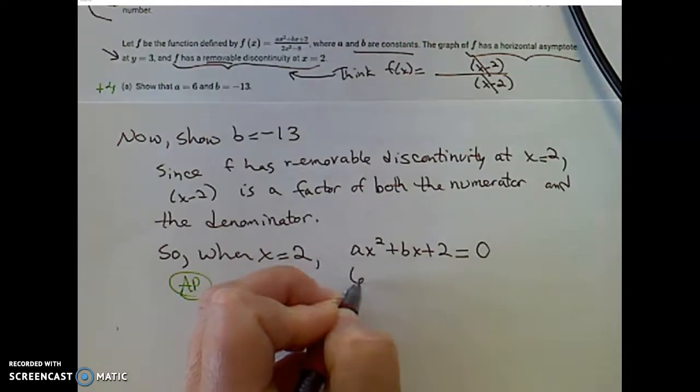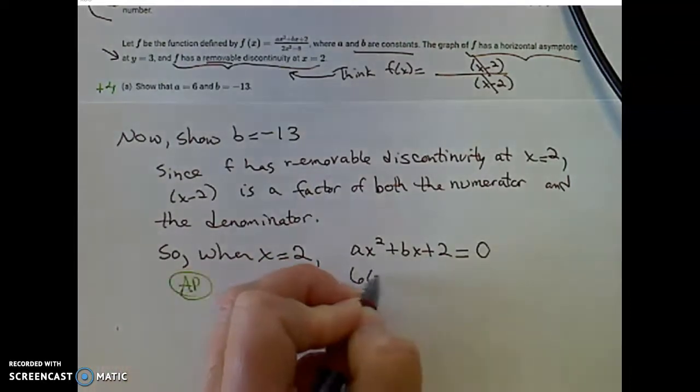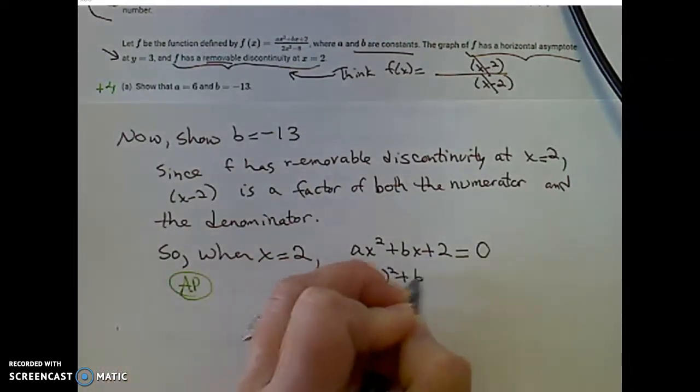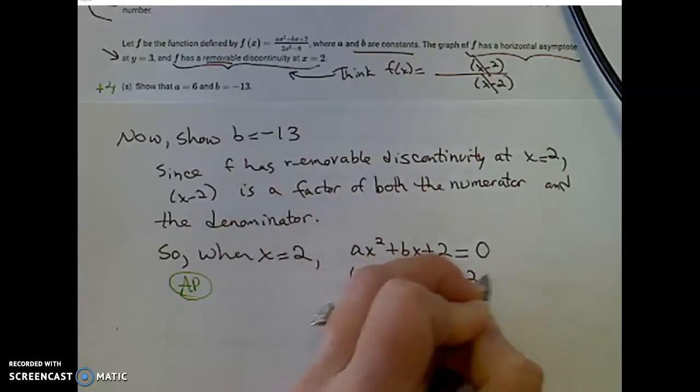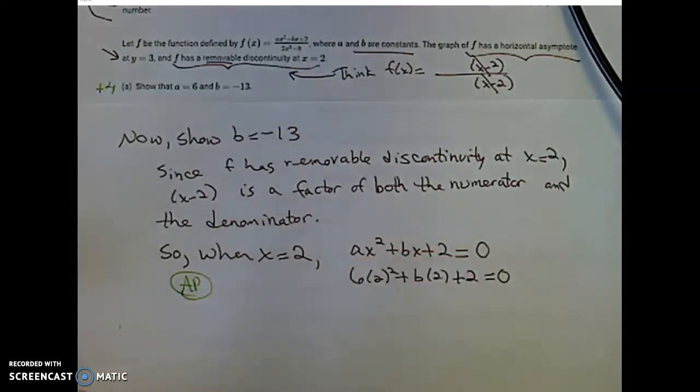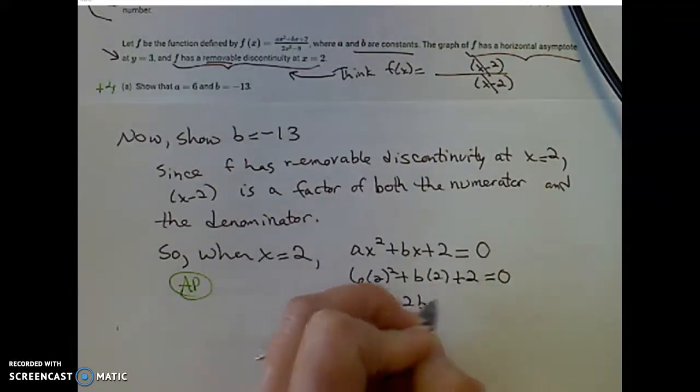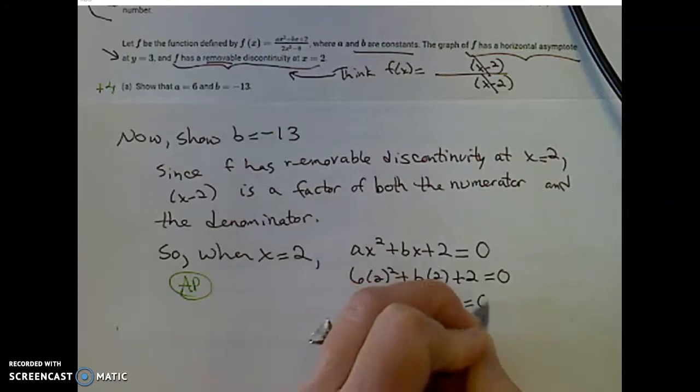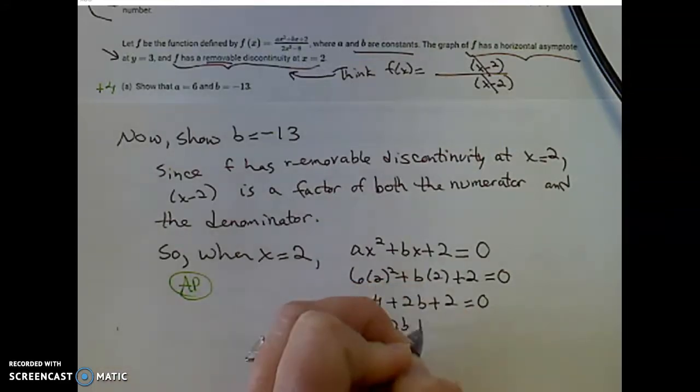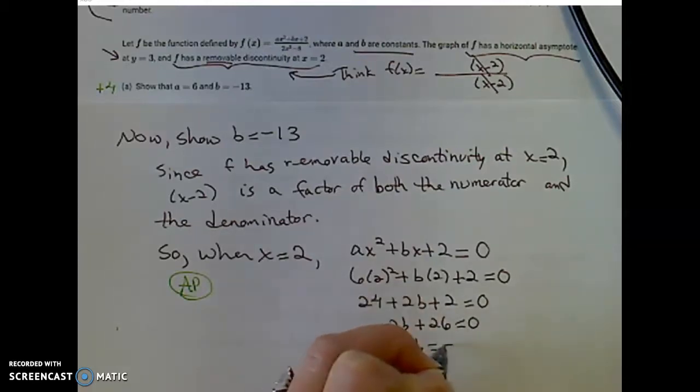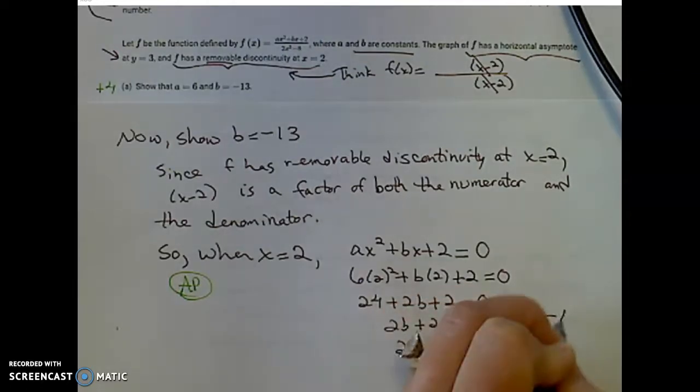a is equal to 6. When x is equal to 2, I can solve for b. 2 squared is 4 times 6 is 24, plus 2b plus 2 is equal to 0. 2b plus 26 is equal to 0. 2b must equal negative 26, and b must equal negative 13.